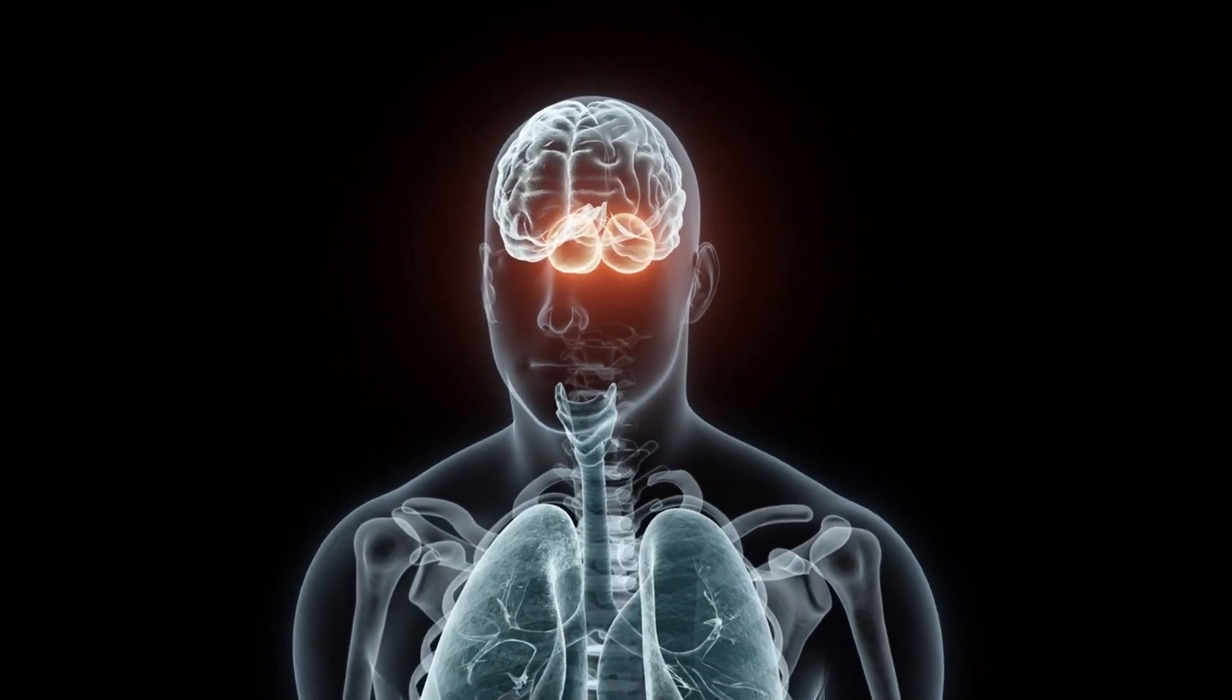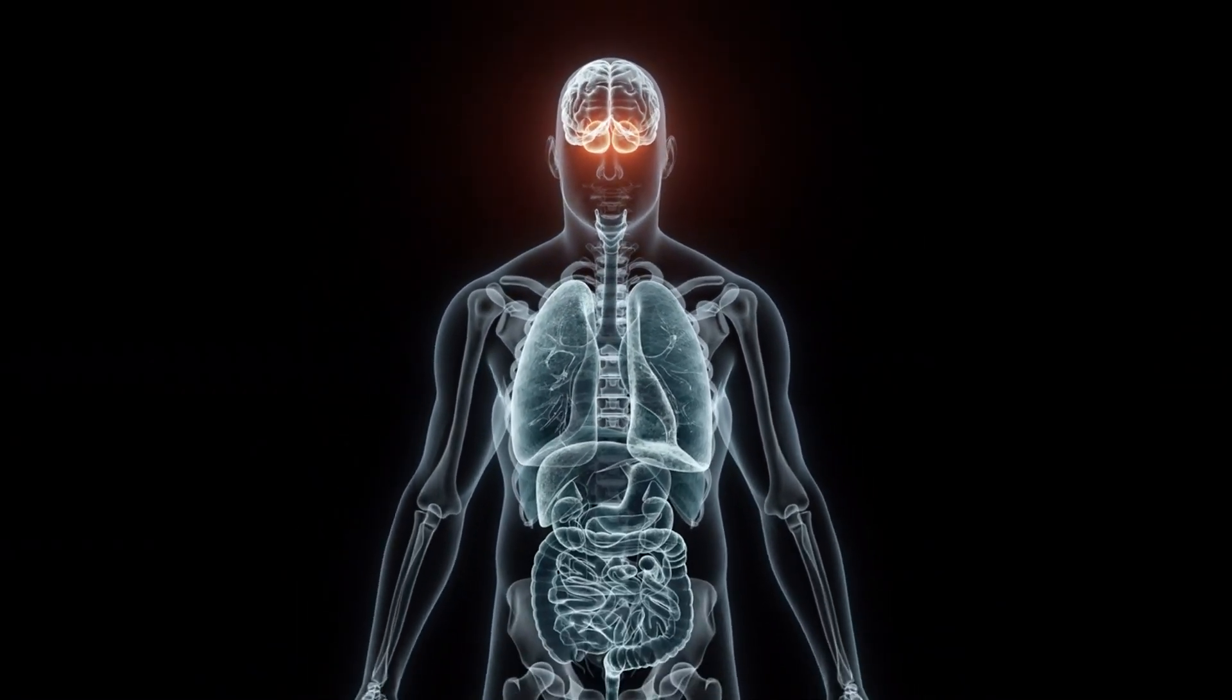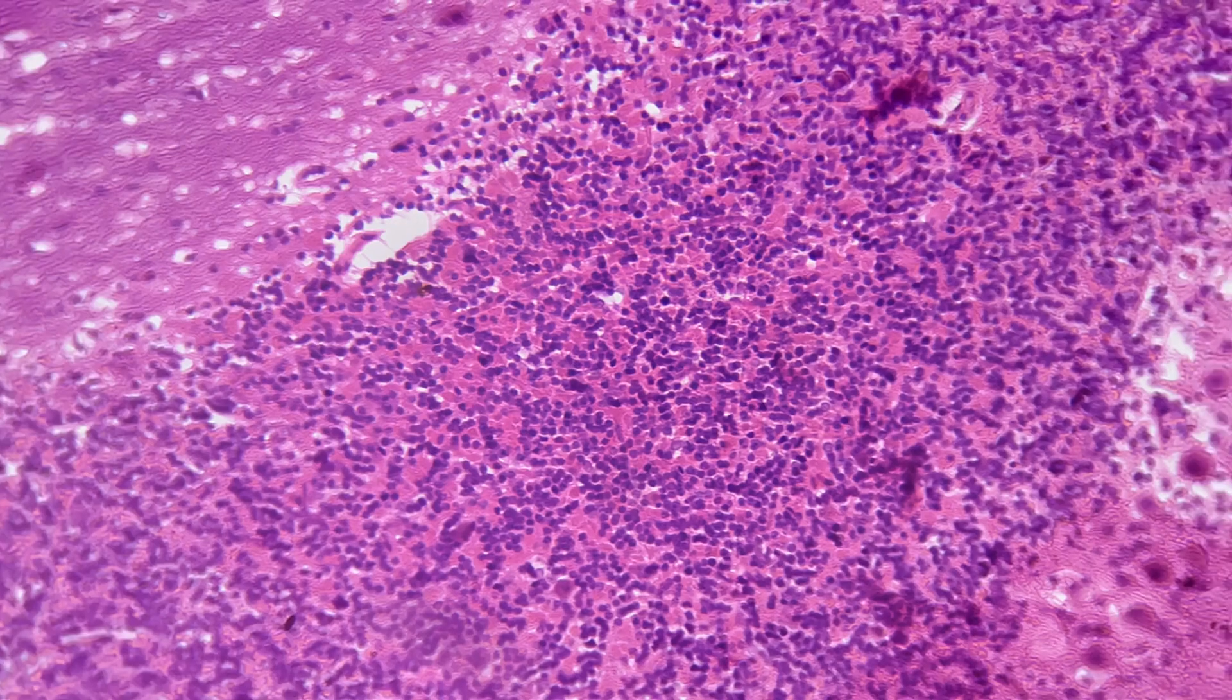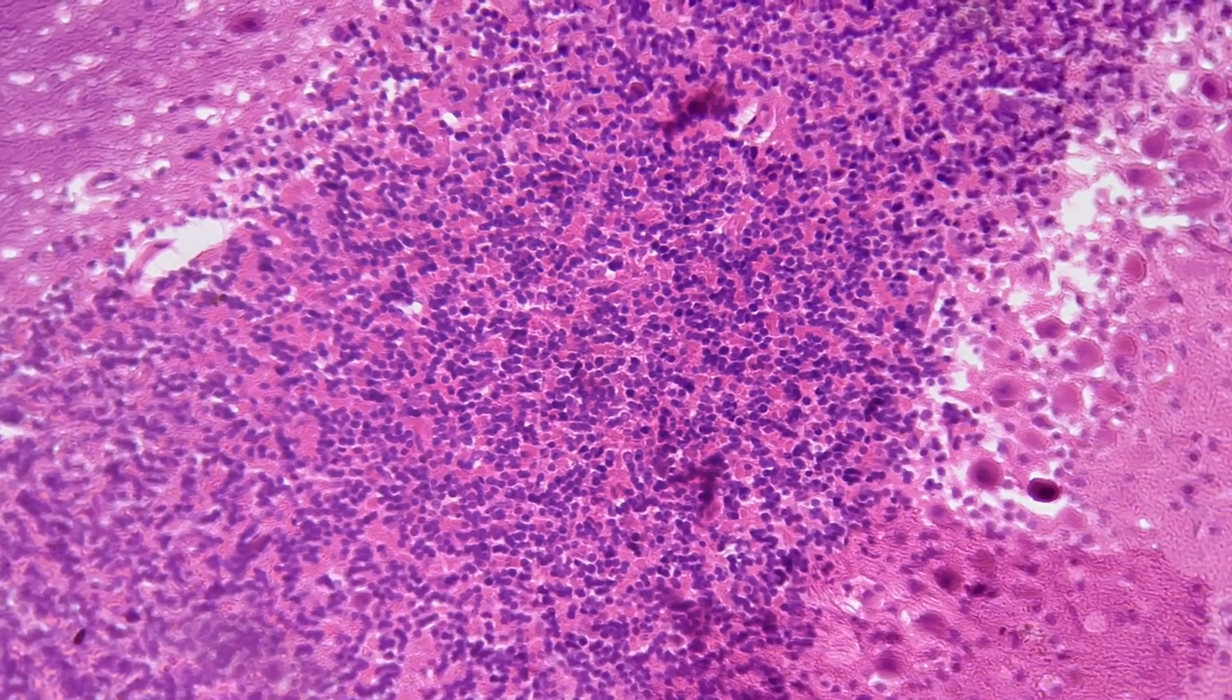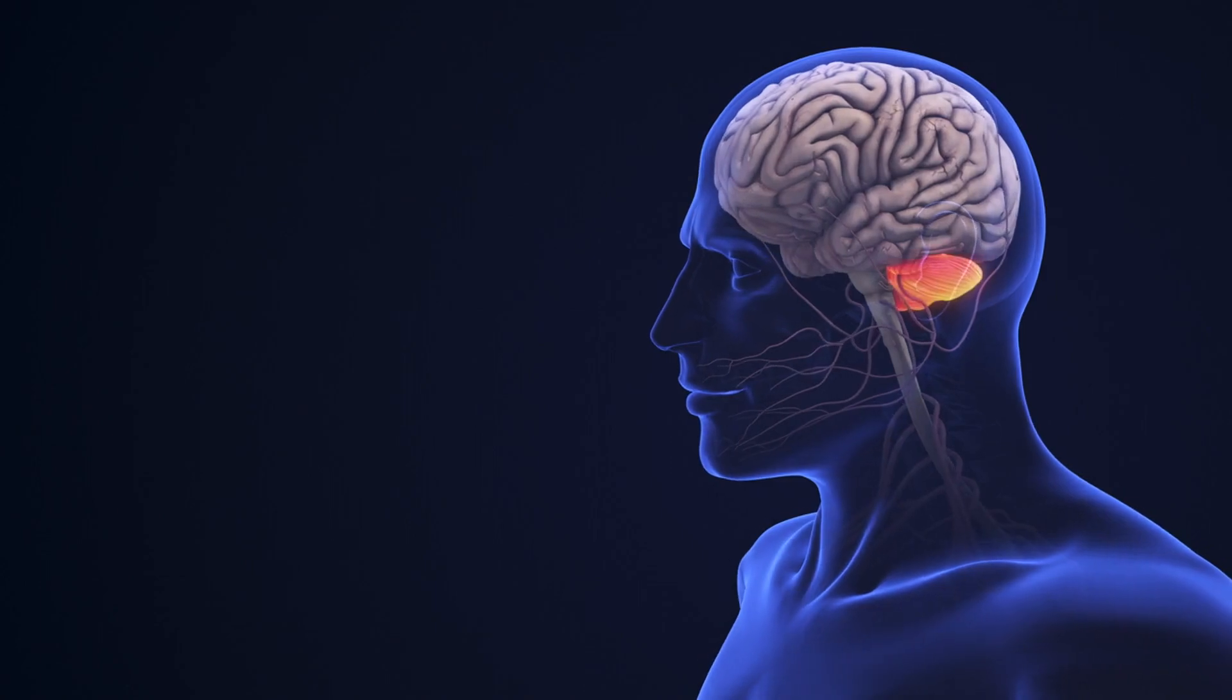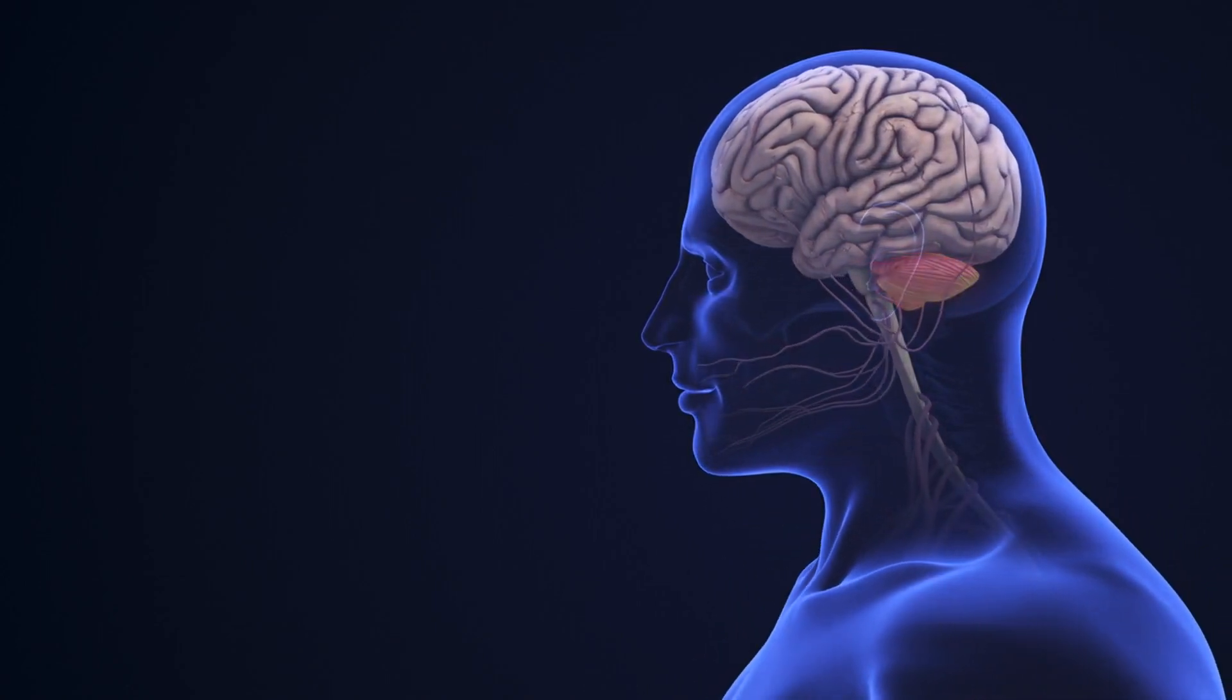The cerebellum, located at the back of the brain, coordinates voluntary movements like posture, balance, and speech. Despite its small size, it contains more neurons than the rest of the brain combined. This little brain ensures our movements are smooth and precise.